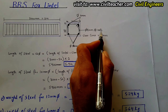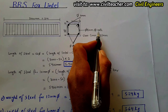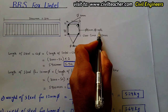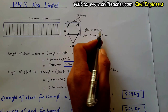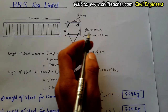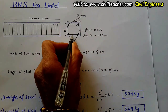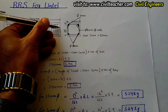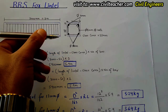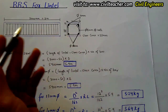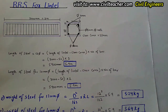For the stirrup we decide the diameter 8 mm, and the center-to-center spacing between one stirrup and the other is 200 mm. The concrete clear cover is 25 mm — from the top, bottom, left side, and right side.